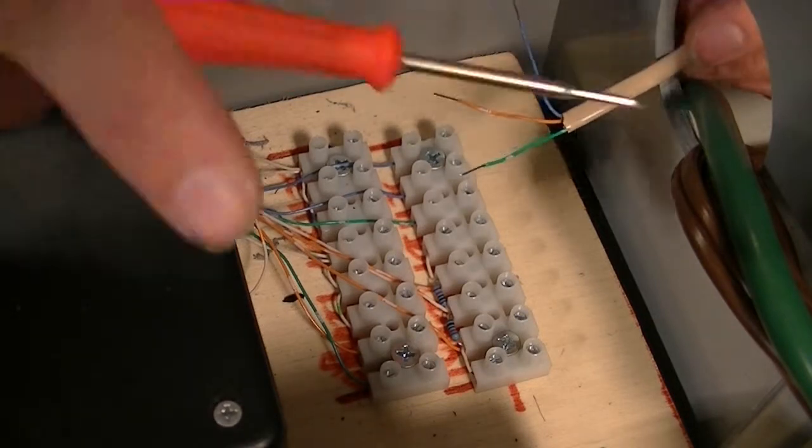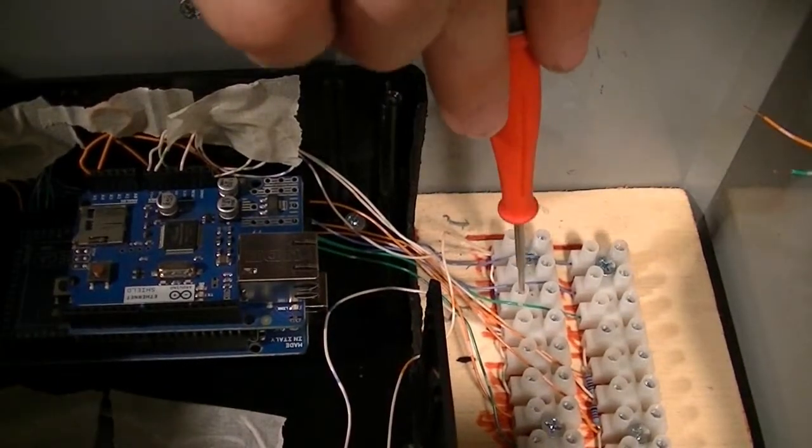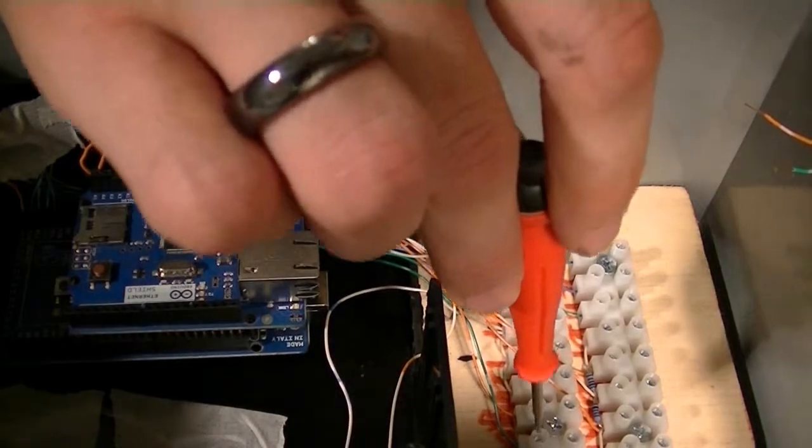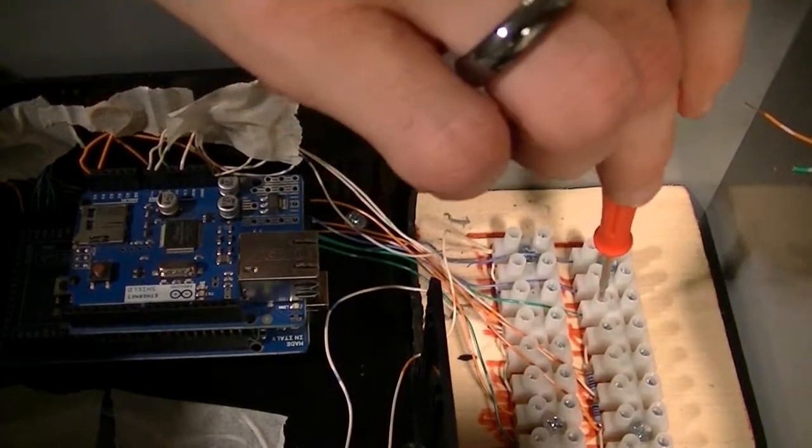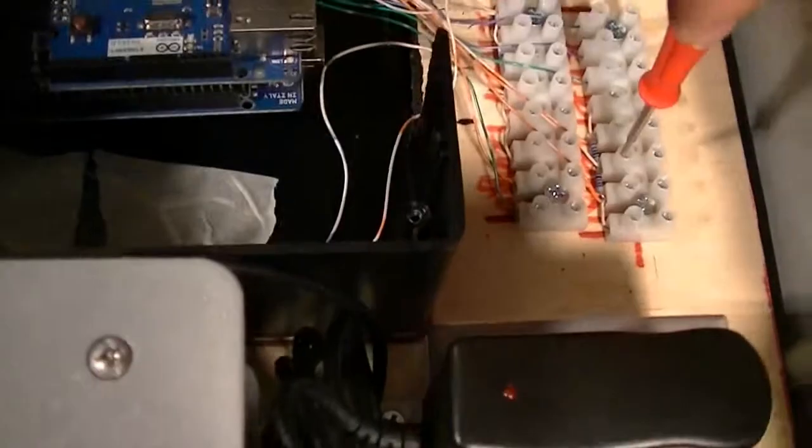These right here are going to be the ground, the VNs. These are going to be the grounds, signal, signal, signal, signal, signal for the moisture. And then this is the 3.3 volt coming in right here.